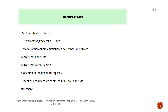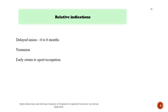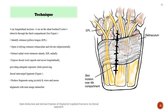Relative indications: delayed union at 4 to 6 months, non-union, early return to sport or occupation. Technique: 4 cm longitudinal incision on the ulnar border of Lister's tubercle through the third compartment.